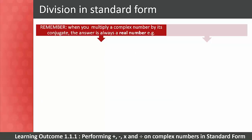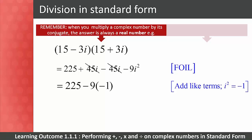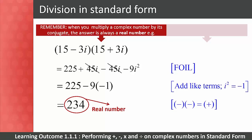Remember: when you multiply a complex number by its conjugate, the answer is always a real number. For example, (15 − 3i)(15 + 3i) gives 225 + 45i − 45i − 9i², and the ±45i terms cancel. Adding like terms and substituting i² = −1 gives 225 + 9 = 234 — a real number.